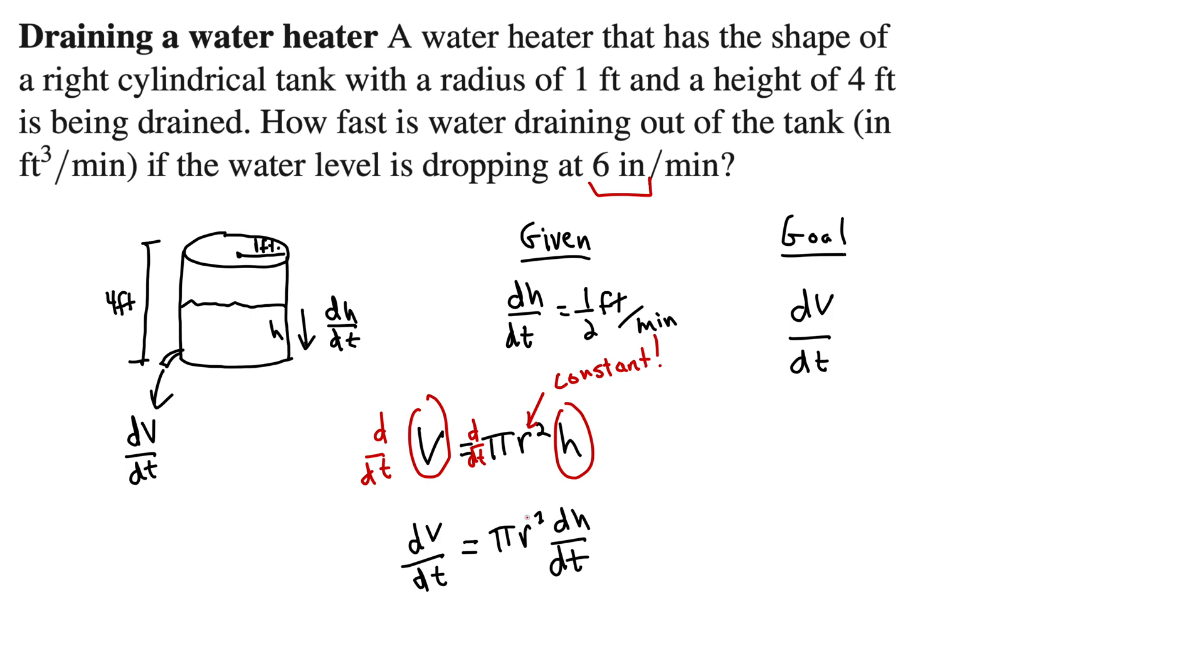Okay, we have a couple of known values to substitute for. R, which we know from our diagram, is one. And then dh dt, which we know from our givens, is one-half. So let's substitute those in. This gives pi. Let's leave it in terms of pi. R squared, so that's one squared, times dh dt is one-half. So how about pi over two?